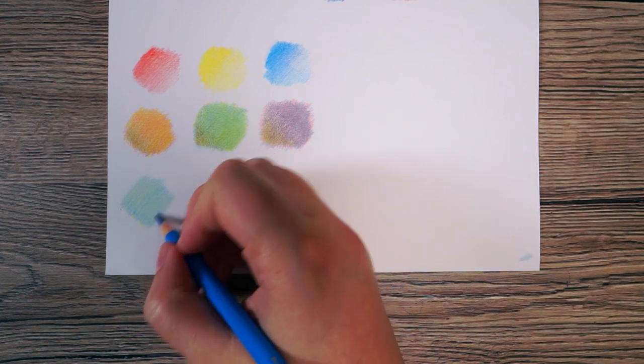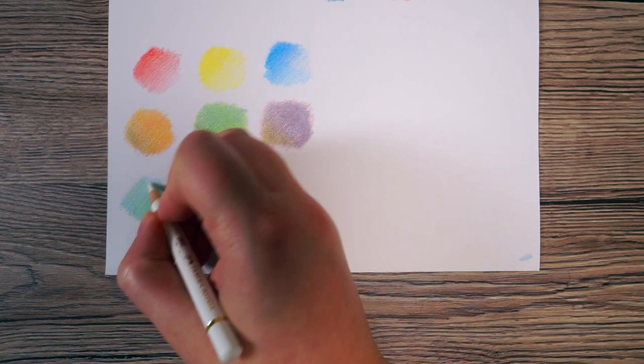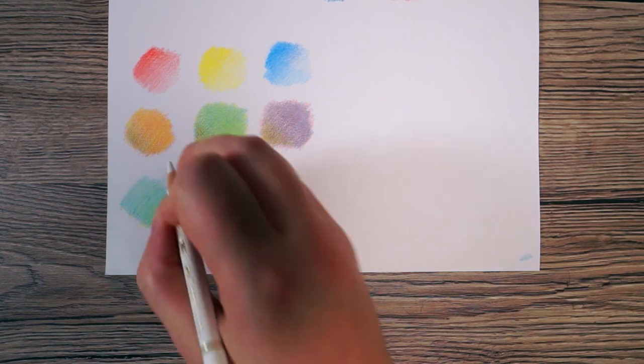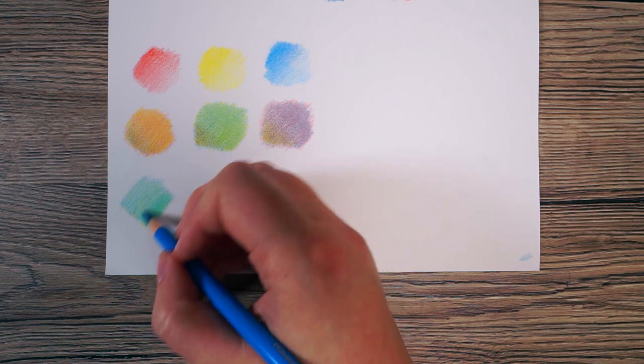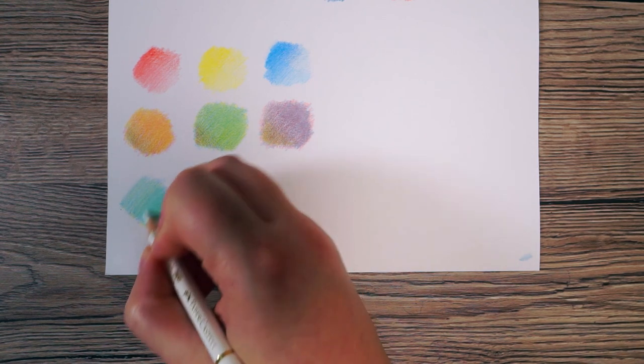And then on top of that, I'm going to put a tiny little bit of yellow just because teal is sort of an ever so slightly greeny blue, and then I can play around a little bit more with the blue and the yellow until I get to the shade I want. I'm happy now that I know how to create this teal color.